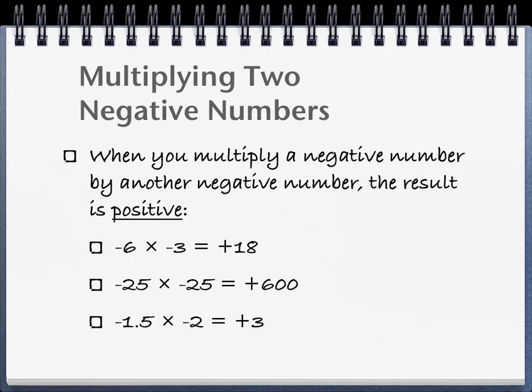So negative 6 times negative 3 equals positive 18. Negative 25 times negative 25 equals positive 600. And negative 1.5 times negative 2, for those of you who understand decimals, is positive 3.